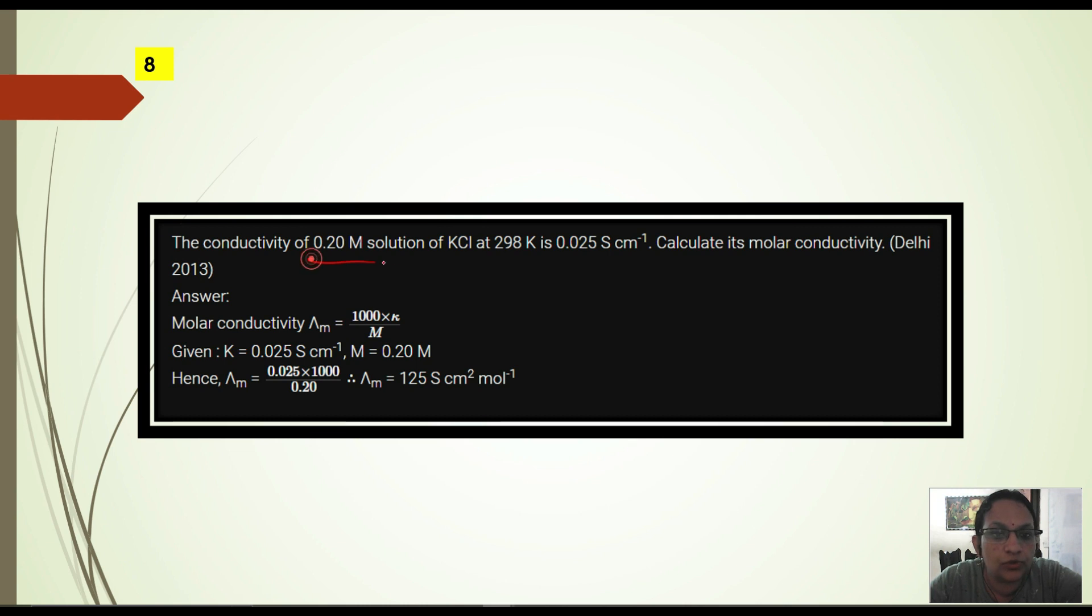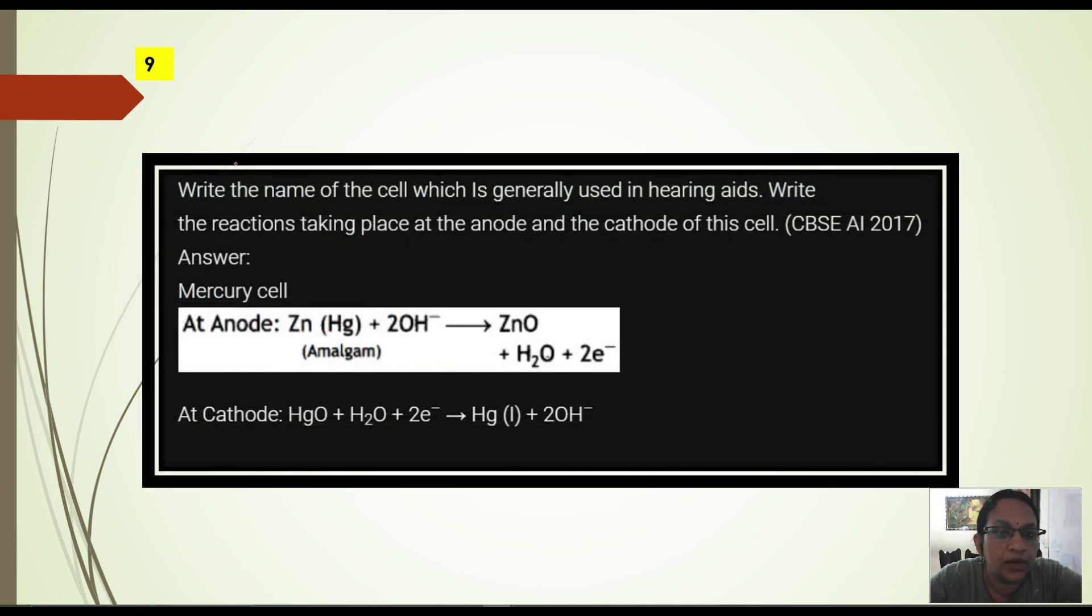Next. Conductivity of 0.2 molarity solution of KCl at 298 Kelvin is given. Conductivity given. You have to calculate molar conductivity. So this relation is also to be learned. Molar conductivity is equal to 1000 into K by M. K value is given here 0.025. This is given, conductivity is K. M which is given is 0.2. And then we have to find molar conductivity. So putting the values, you will get the answer.